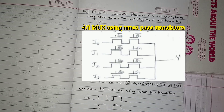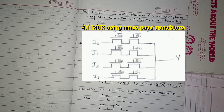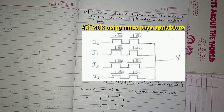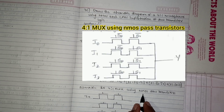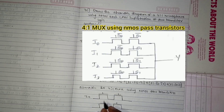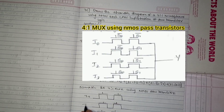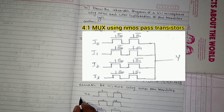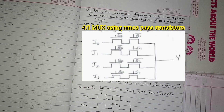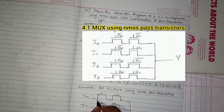Then I will tell you how to label them. Since the question asks only for NMOS pass transistors, we are drawing only NMOS transistors. So i0, i1, i2, and i3 are the inputs connected to the drains of these transistors, and the output will be the combination of all these at a common node.